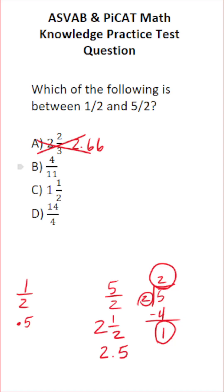What about 4 over 11? Is that between 1½ and 5 over 2? We can quickly convert 4 over 11 to decimal by doing long division. We could read this as 4 divided by 11. 11 does not go into 4, so we have to add a decimal and a zero placeholder, bring up our decimal.